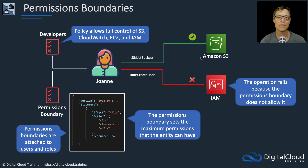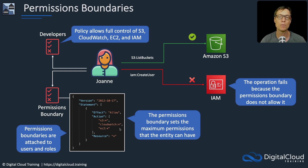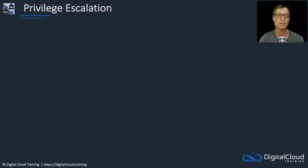You do still need the permissions in a policy. In the case of S3, she does need to have S3 permissions — you don't get granted permissions through the permissions boundary, but it controls what permissions you're able to use. Privilege escalation is one of the use cases for why we implement permissions boundaries.